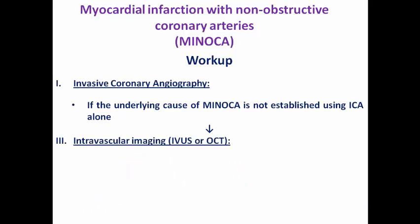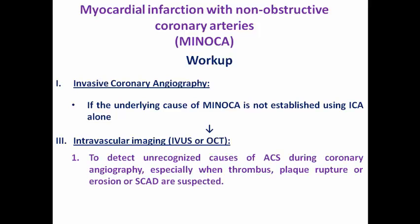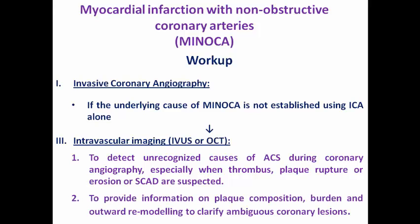Intravascular imaging like IVUS or OCT can detect unrecognized causes during coronary angiography such as small non-occlusive thrombus, plaque rupture, erosion, or a small dissection flap in spontaneous coronary artery dissection — all potentially invisible on angiography alone. Moreover, it provides information on plaque composition, burden, and outward remodeling, helping to clarify ambiguous lesions and diagnose significant atherosclerotic coronary artery disease.